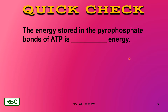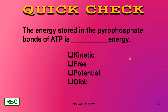Here's a quick check. The energy stored in the pyrophosphate bonds of ATP, adenosine triphosphate, is what kind of energy? Your choices are kinetic energy, free energy, potential energy, and Gibbs energy. Remember, we're talking about stored energy, and any kind of energy that is stored is potential energy — it is energy that can potentially do work or be used to do work. If you answered potential, you're absolutely correct.